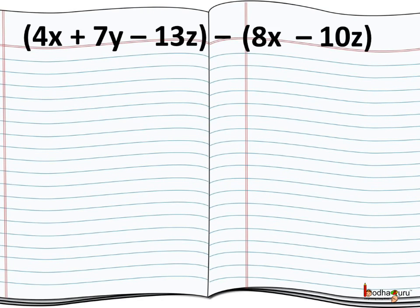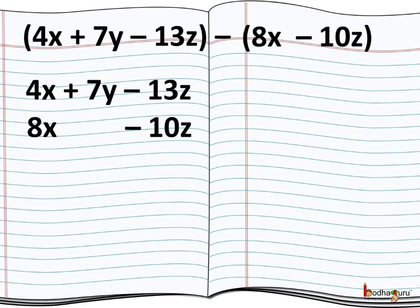4x plus 7y minus 13z and we subtract from it 8x minus 10z. Like we do for addition, same way in subtraction too we subtract the like terms only. As we are going to subtract the like terms, let's write every term below its like term, so that we can subtract easily.